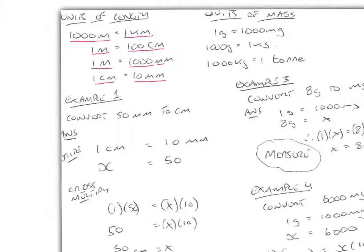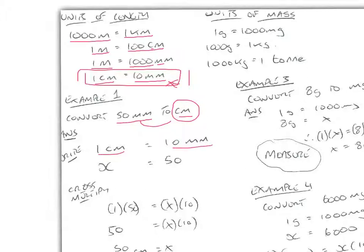One kilometre is 1000 metres. So often we're asked to convert, say, 50 millimetres to centimetres. To do this we check the exchange rate between millimetres and centimetres. We see that 1 centimetre is 10 millimetres. We write that down and we're converting 50 millimetres, so we put the 50 millimetres underneath the 10 millimetres. On the centimetre side we write x, because we're trying to find how many centimetres that would be.